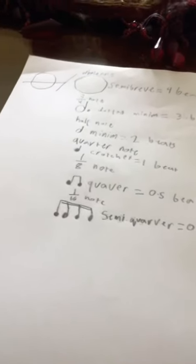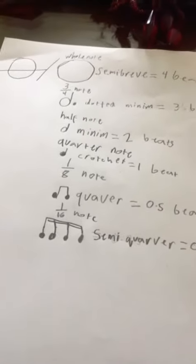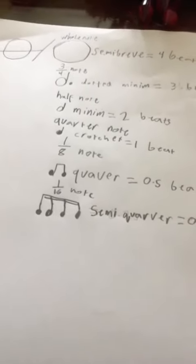Hi guys, welcome back to my channel. Today I'm going to be showing you guys the piano notes and what they mean. So let's get started. The two notes on the top equal a whole note, and it's also known as a semibreve.